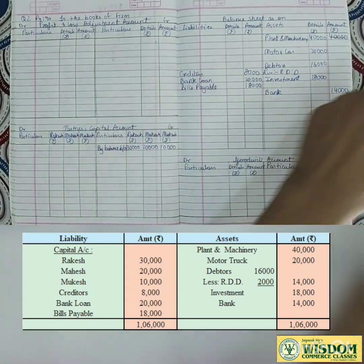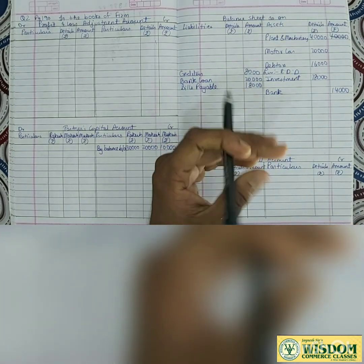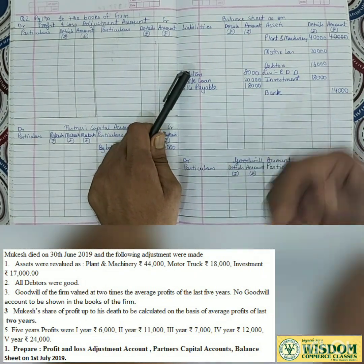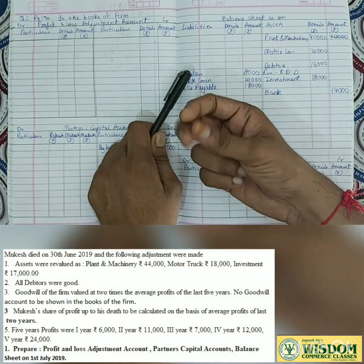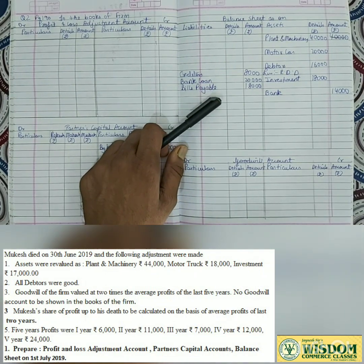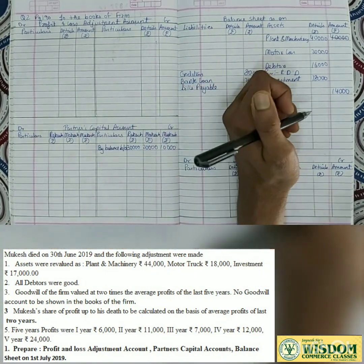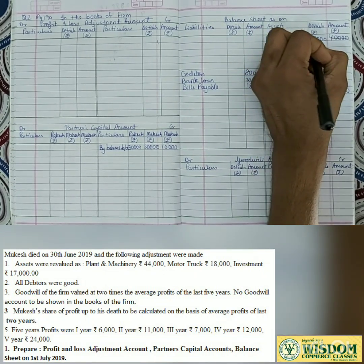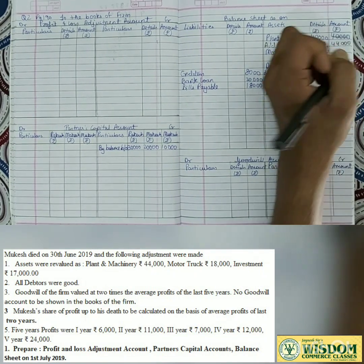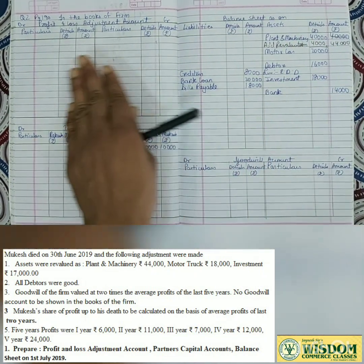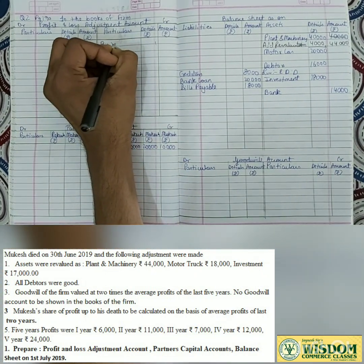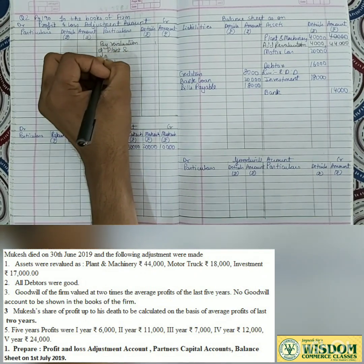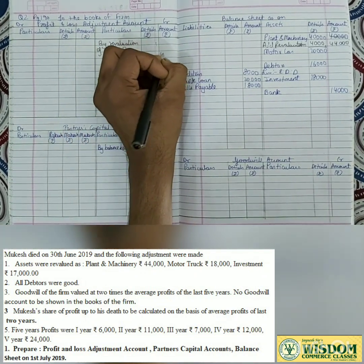Now moving to adjustments written in black pen. Mukesh died on 30th June - 3 months after the financial year started in April. First, revaluation of all assets: plant and machinery was revalued to 44,000, so add revaluation of 4,000 rupees. Asset increased - good news - so P&L adjustment credit side: 'By revaluation of plant and machinery - 4,000 rupees'.